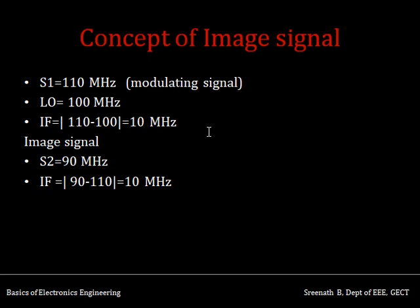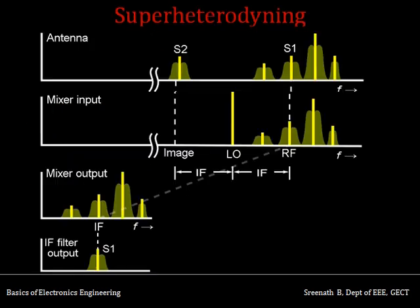For example, suppose S1 is at 110 MHz and the local oscillator frequency is 100 MHz. The intermediate frequency signal will be the difference: 110 minus 100 = 10 MHz. Now suppose there is an image signal S2 at 90 MHz — differing from the local oscillator by the same 10 MHz. The IF output from S2 would also be 10 MHz. However, the message is embedded only in the 110 MHz signal S1; S2 carries no information. Therefore, S2 is removed at the RF stage.